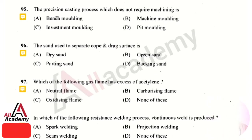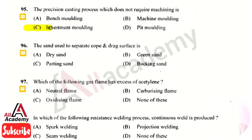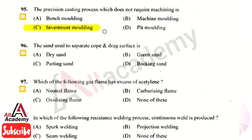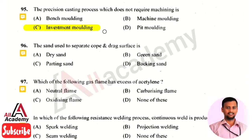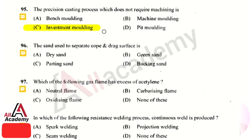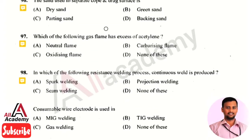The next question: the precision casting process which does not require machining — the right answer is option 3, that is investment molding. In investment molding, once the product is done it does not require any machining process. It is a precision casting process in which machining is not required.